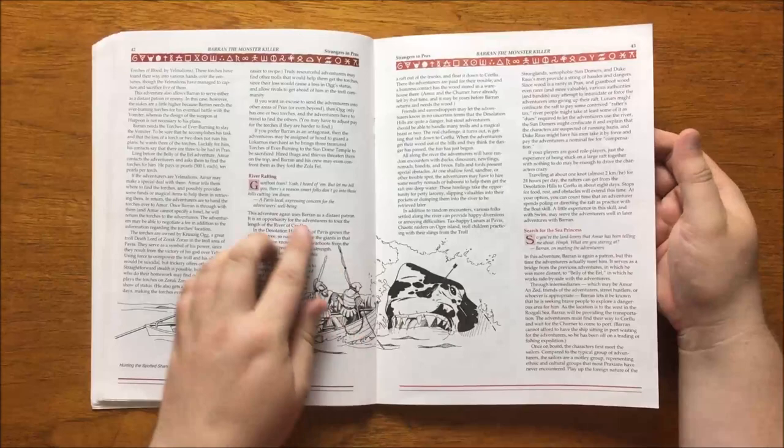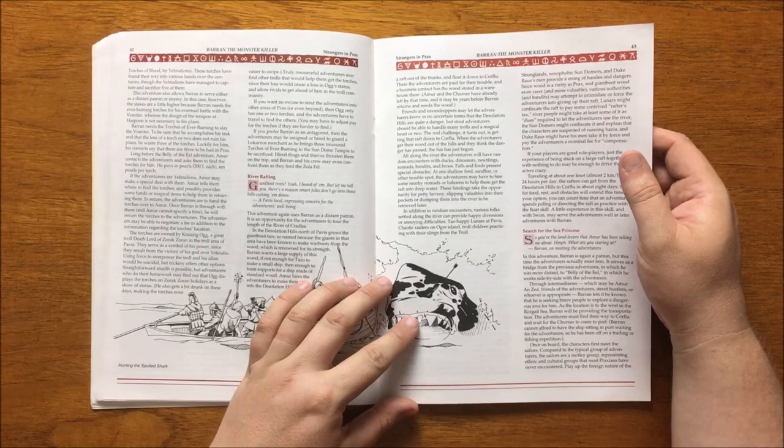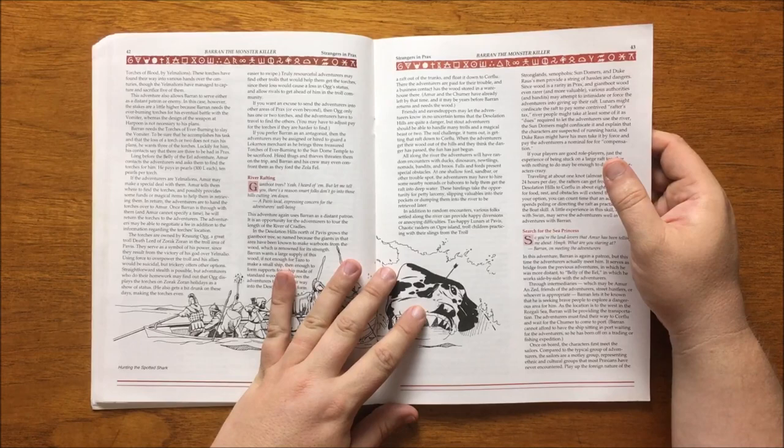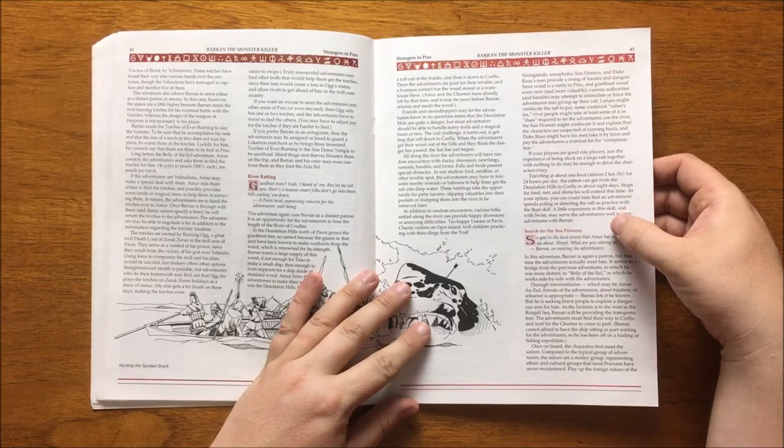The third seed involves the adventurers journeying to the Desolation Hills to obtain wood from the Giant Boot Tree, so named as Giants make war boots from the wood, and it is renowned for its strength. Baron wants a large supply of the wood in order for Tazo to make a small ship or at least a support for a ship made of normal wood. The adventure involves not only the players obtaining the wood, but the subsequent floating of the wood down the River of Cradles by raft and all of the various dangers and encounters that can happen.